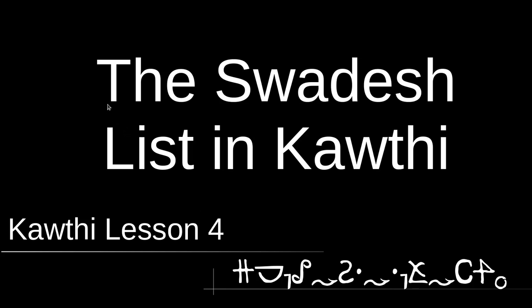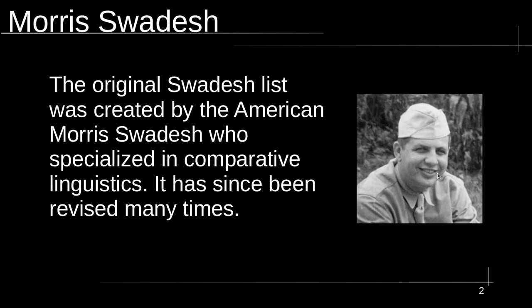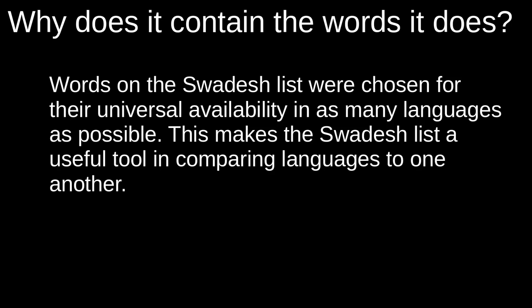Today we will be talking about the Swadesh List, and we will be going over the Swadesh List translated into Karthi. So what is a Swadesh List? The original Swadesh List was created by the American Morris Swadesh, who specialised in comparative linguistics, and it has since been revised many times. The words on the Swadesh List were chosen because of their universal availability in as many languages as possible. The Swadesh List is not necessarily a good list to memorise if you're learning a new language, but it is a very useful list when we are comparing various languages to one another, because many languages have these words in them.